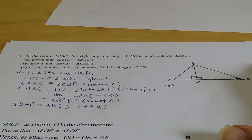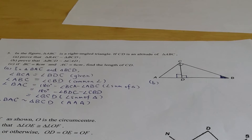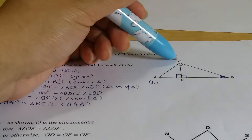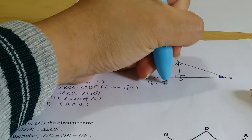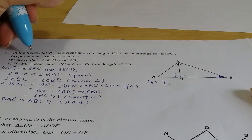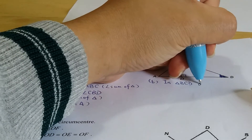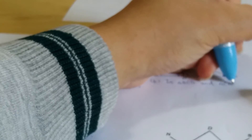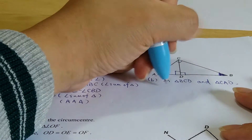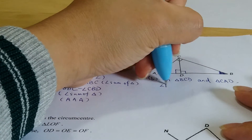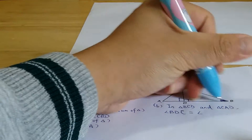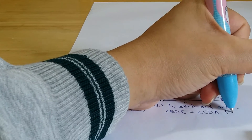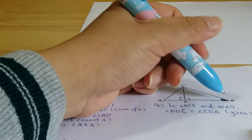For part B, we know that this time we are proving triangle BCD similar to triangle CAD. In triangle BCD and triangle CAD, first of all, they have a right angle here. Angle BDC equals angle CDA — this is given because they have right angles. For the next angle, we proved that angle BAC equals angle BCD, so angle BAC equals angle DAC.